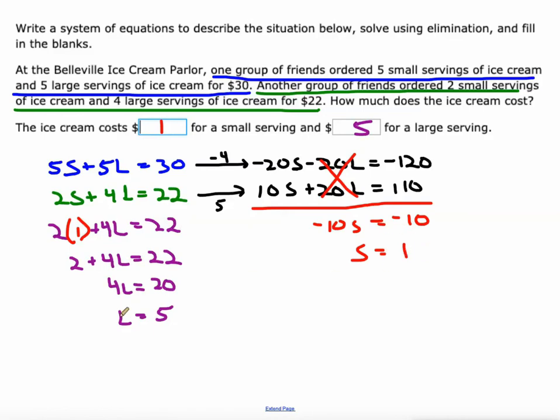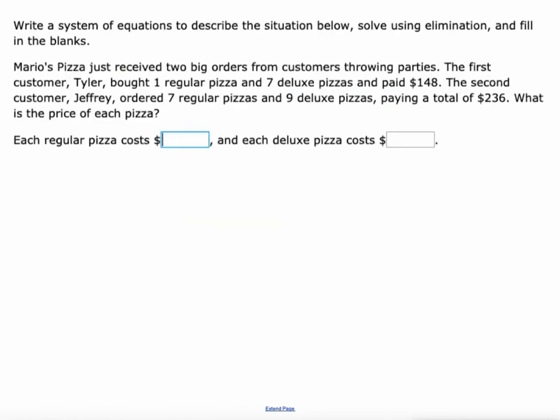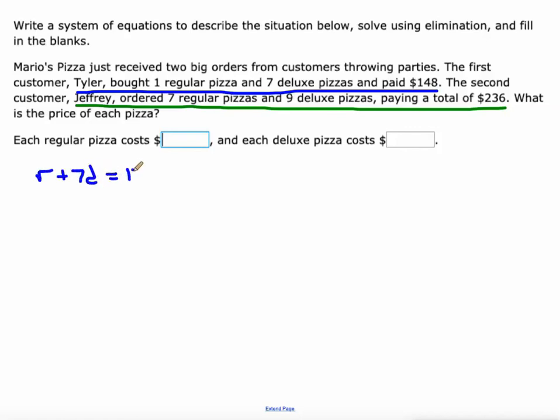Mario's Pizza just received two big orders from customers throwing parties. The first customer, Tyler, bought one regular pizza and seven deluxe pizzas for $148. The second customer, Jeffrey, ordered seven regular pizzas and nine deluxe pizzas for $236. So there's our two equations: r + 7d = 148 and 7r + 9d = 236.